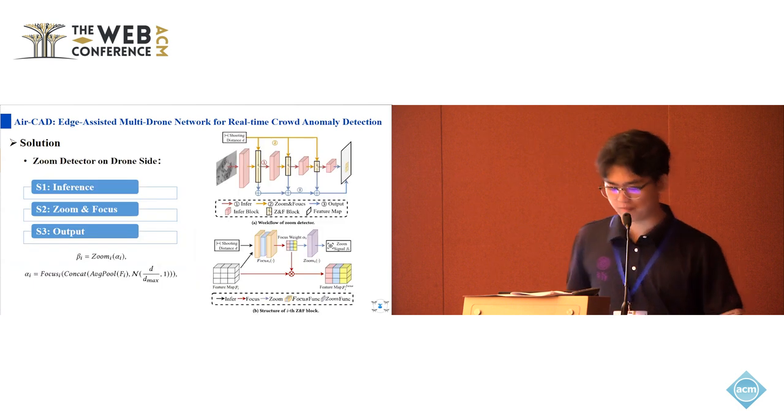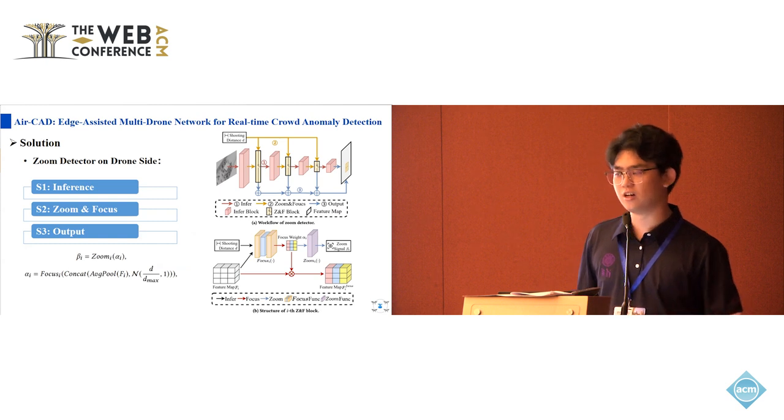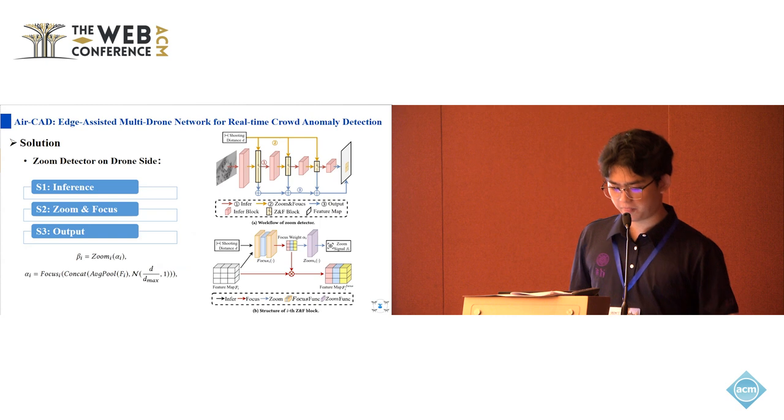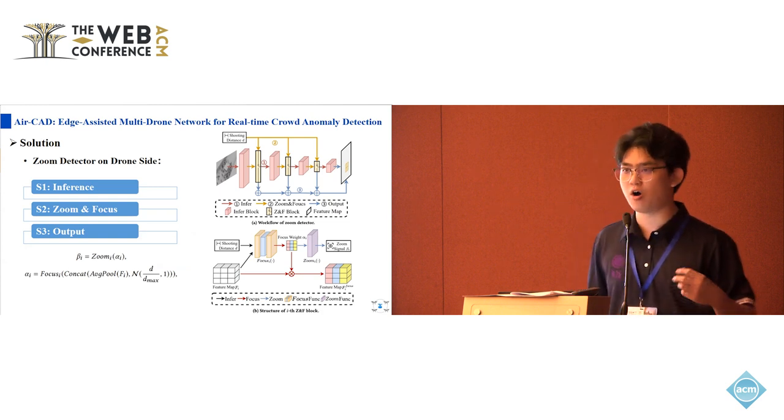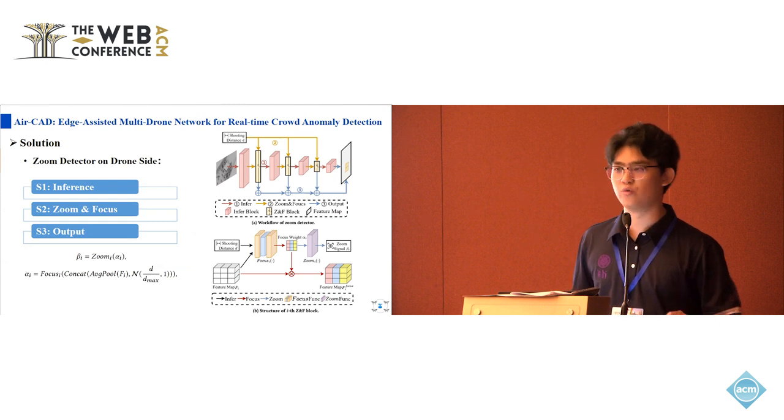Here is the pipeline of the zoom detector. Compared with the original detector, our zoom detector uses additional zoom and focus blocks to sense the shooting distance, which has three steps. First, the zoom detector uses inference blocks to get a feature map from an image. Then, the zoom and focus block will focus on important channels in the feature map and decides whether to continue inference. The feature map will be passed to the next inference block. If it decides to stop, the feature maps from all previous inference blocks will be fused and output the final result, that is detect the person.